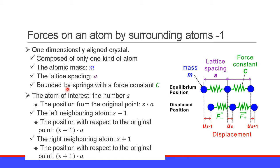The atoms are bonded by springs with a force constant c. Let us consider the atom number s. The position of atom s from the origin is s times a. The left neighboring atom is number s minus 1, with position (s minus 1) times a, and the right neighboring atom is number s plus 1, with position (s plus 1) times a.